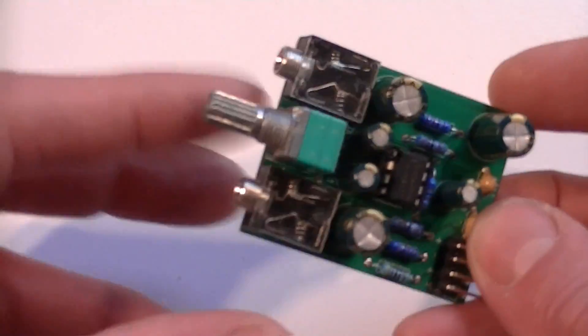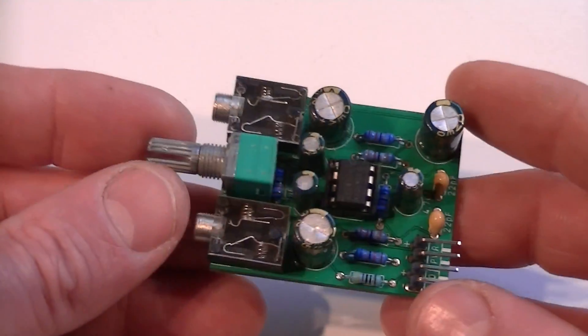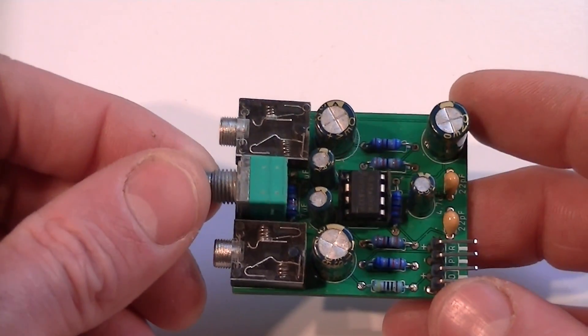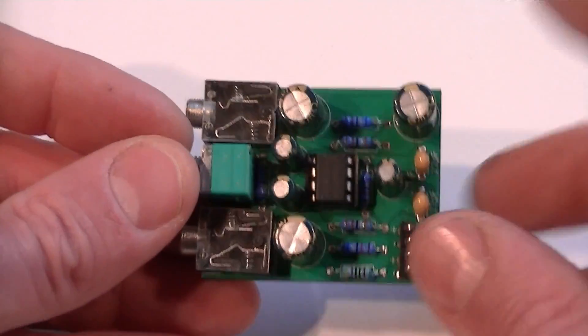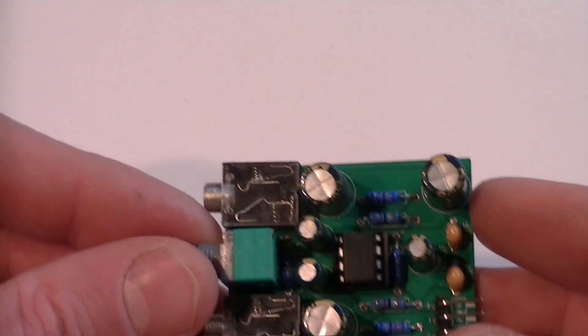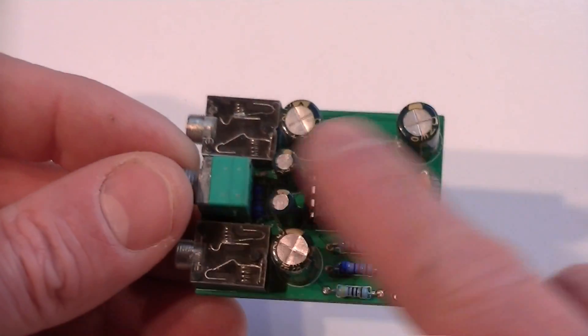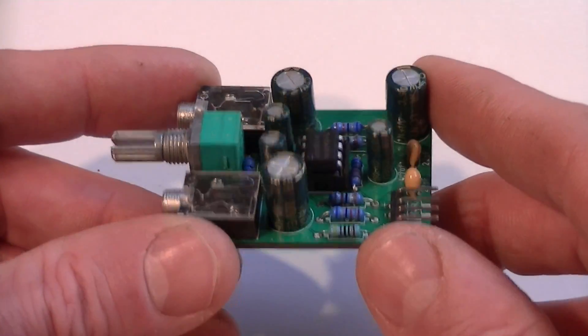So it's got an input and output. You input your music and the outputs obviously to your headphones. There's a volume potentiometer. There's an op amp there, I think it's 5532 op amp, and some caps and the usual components.